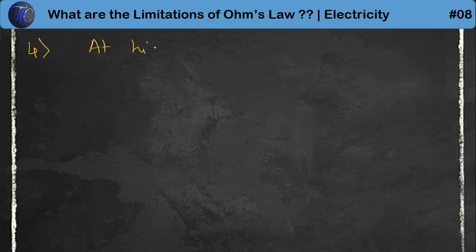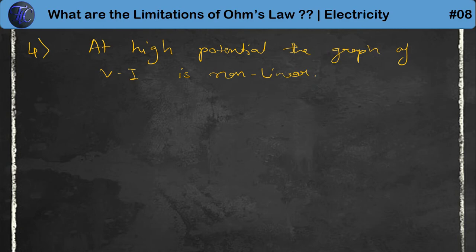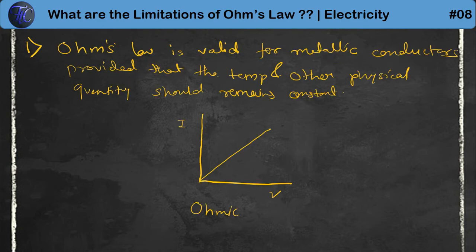Fourth limitation: at high potential, the graph of V versus I is non-linear, and so it will also not obey Ohm's Law. These are the four limitations of Ohm's Law.